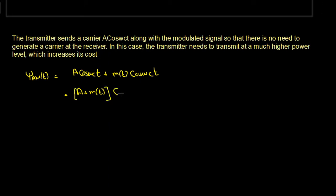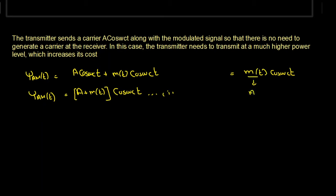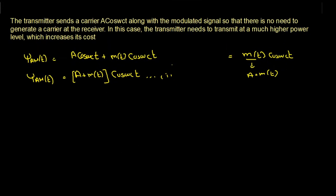This can be written as (A + m(t))·cos(ωct), which is the equation of amplitude modulation with carrier. Comparing with double sideband suppressed carrier, which was m(t)·cos(ωct), in AM with carrier m(t) is replaced by (A + m(t)). If we set A = 0, we get back to double sideband suppressed carrier.